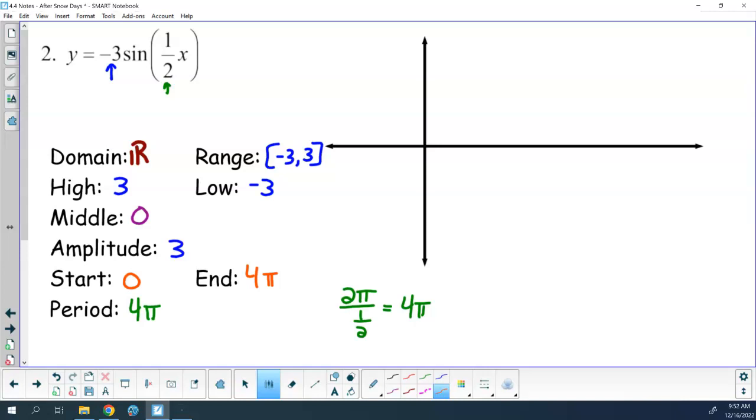It's a sine function with a negative A value. That means we're going to go down first, then back up. Filling in my eight key numbers. Positive three, zero, negative three, zero, 4π. Half of that is 2π. Half of that is π. And the average of the other two is 3π. Agree? Good. Good times.